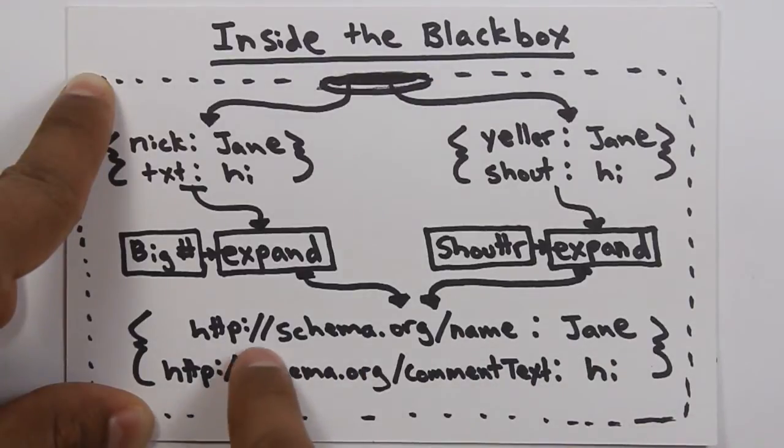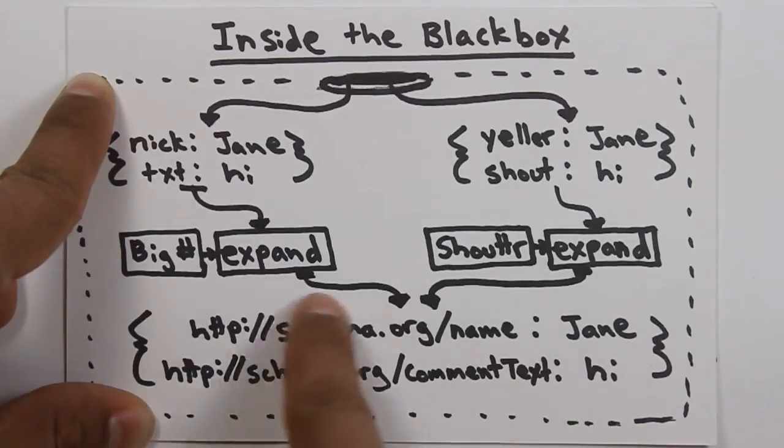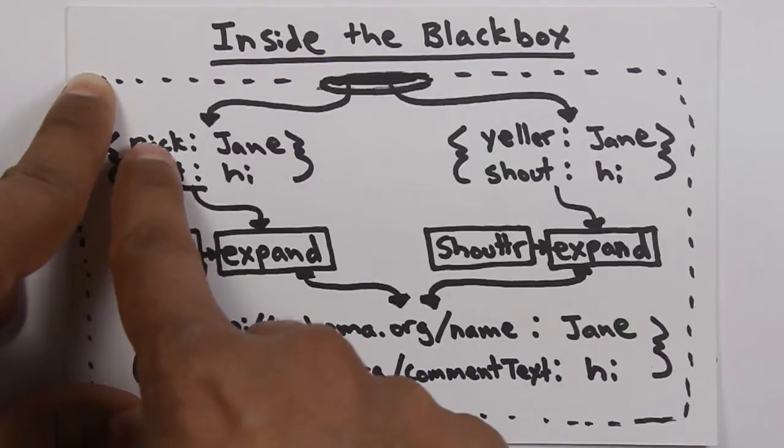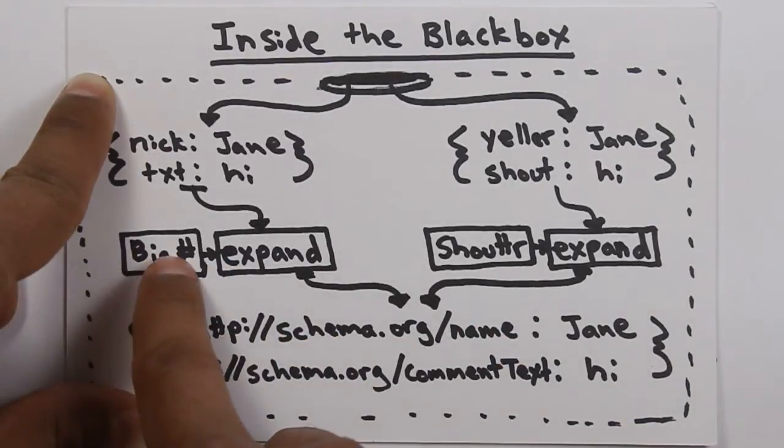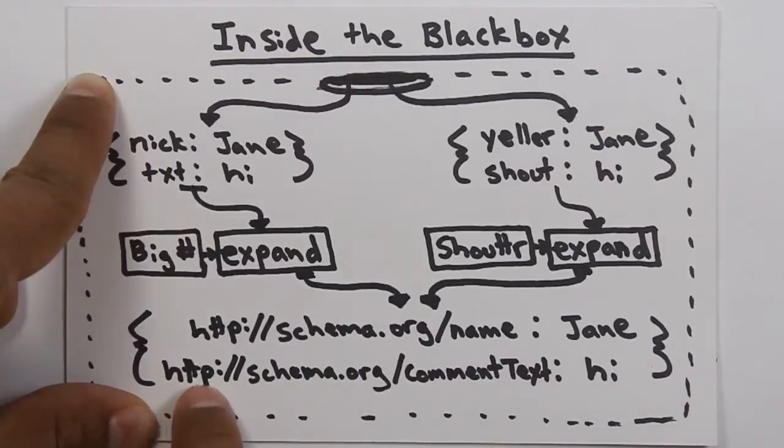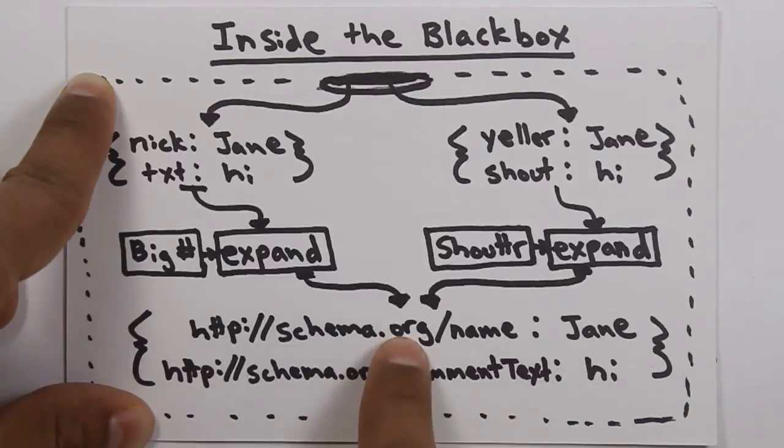As we can see, it's much more verbose. A developer would never really want to work with this object. But machines love this type of information. It's very specific, right? So, Nick here has actually been expanded out into this URL using the BigHash context. And so has text. Text has been expanded out into this long URL using the BigHash JSON-LD context.